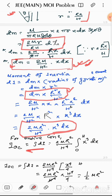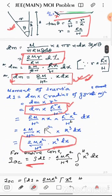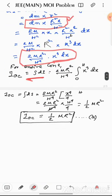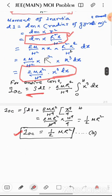Then we get the moment of inertia for the entire cone about the axis passing through the center. We get I_OC where OC is the axis of rotation. We get I_OC equals to half M R square.